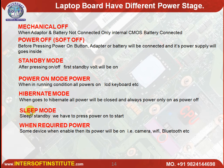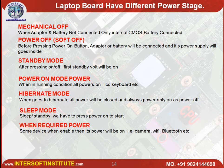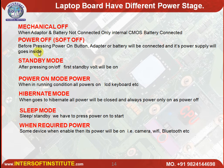One more mode is sleep mode — sleep mode and standby are similar. When we press power on to start, some devices only get power when required. Devices like the camera, Wi-Fi, and Bluetooth get power only when we enable that device. So to remember: mechanical off, power off, standby, power on mode, hibernate mode, sleep mode, and when-required mode. We will see the next chapter.